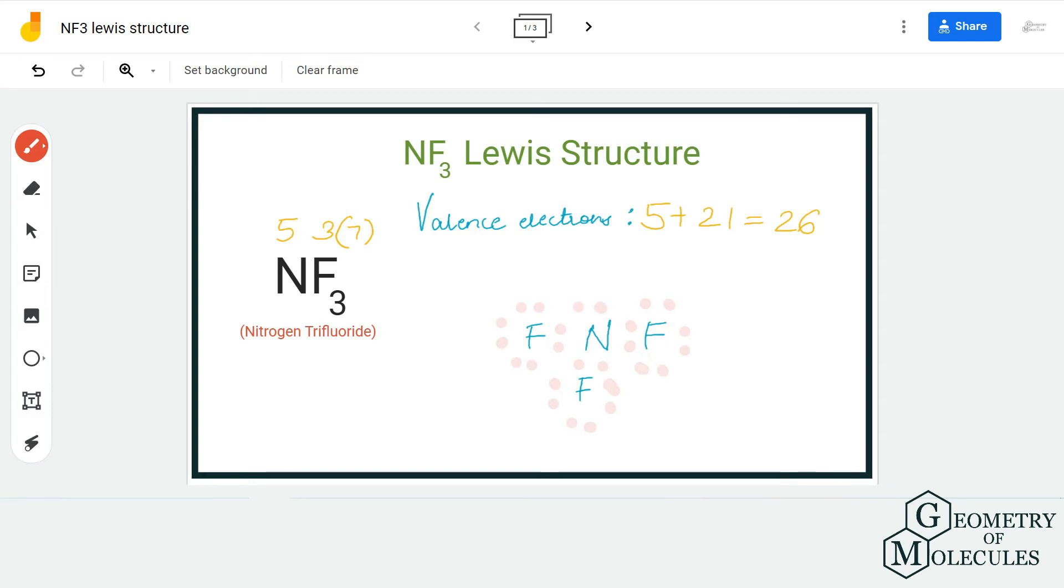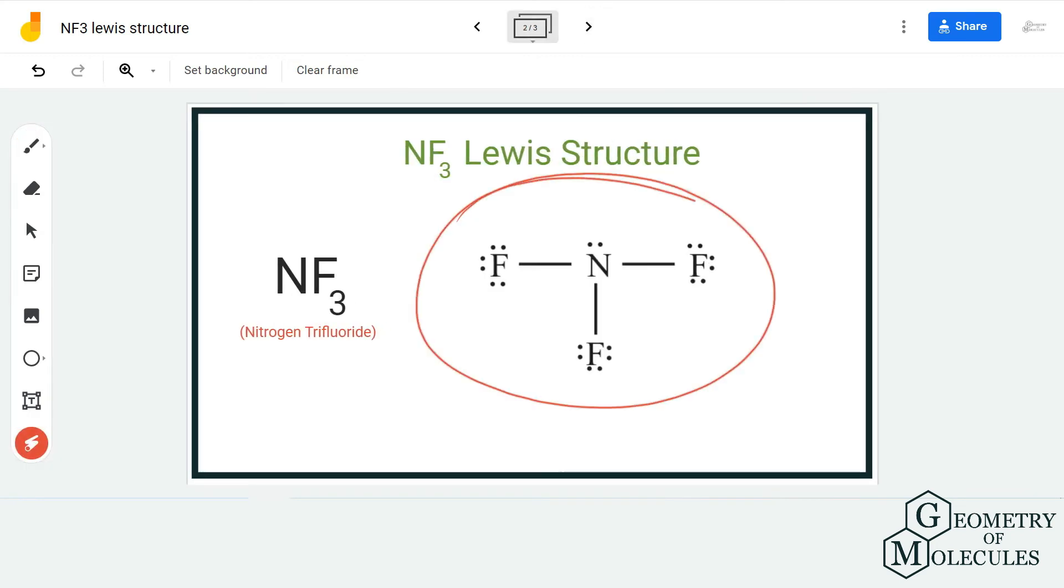Now if you look at this Lewis structure, we have complete octets for all atoms. All the fluorine atoms have eight valence electrons in their outer shell, which means a complete octet. Even nitrogen atom has a complete octet because it has eight valence electrons in its outer shell.